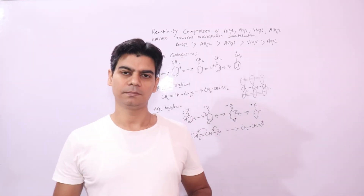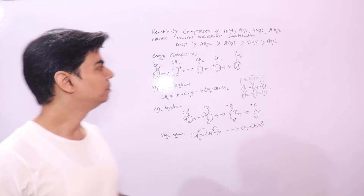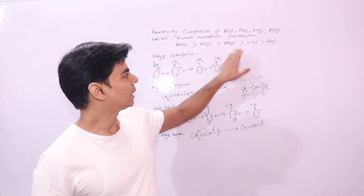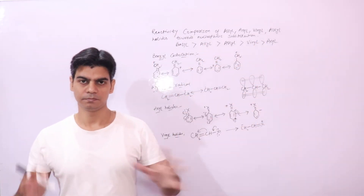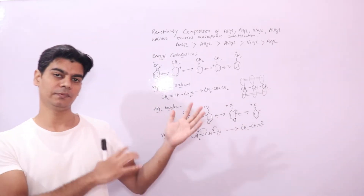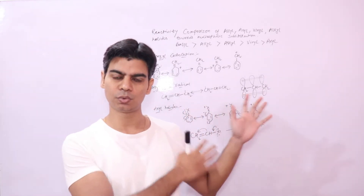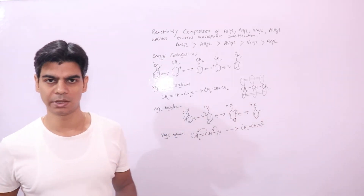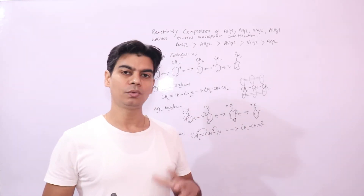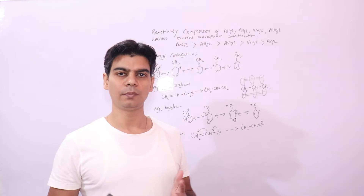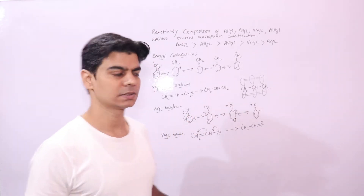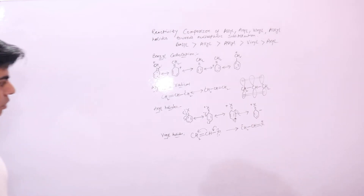Today we will talk about reactivity comparison of benzyl, allyl, alkyl, vinyl, and aryl halides based on whatever we have studied throughout the chapter haloalkanes and haloarenes. Then we will see how to distinguish between aryl halides and alkyl halides using the silver nitrate test.